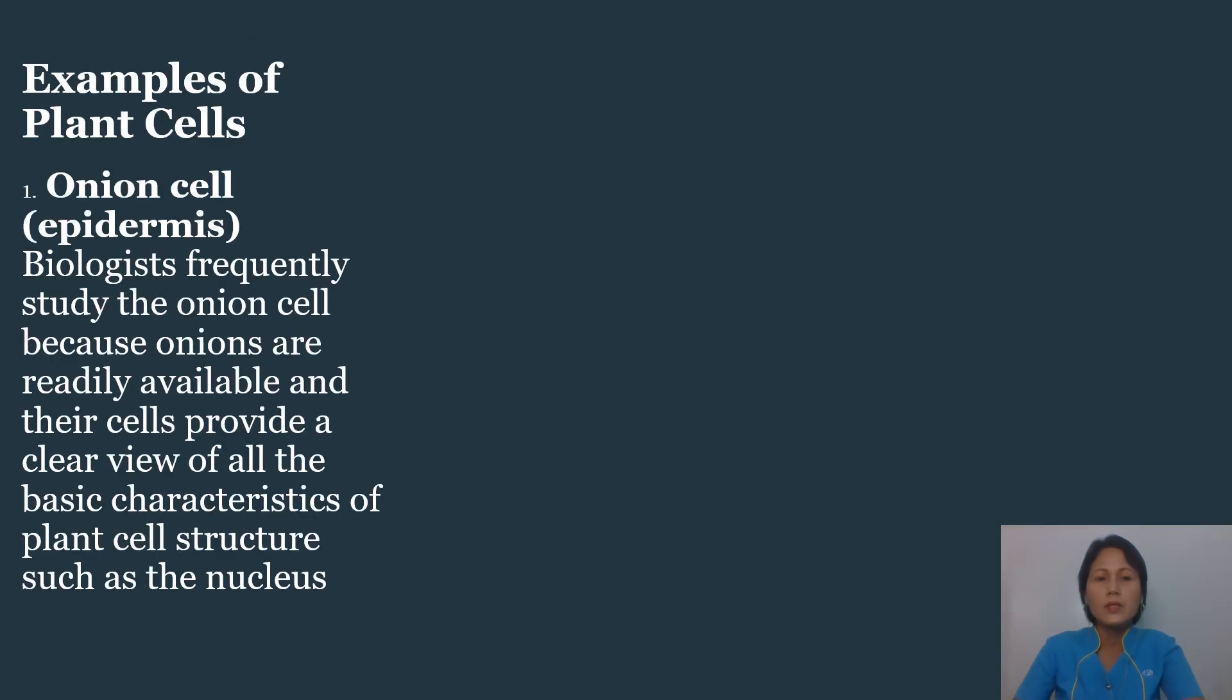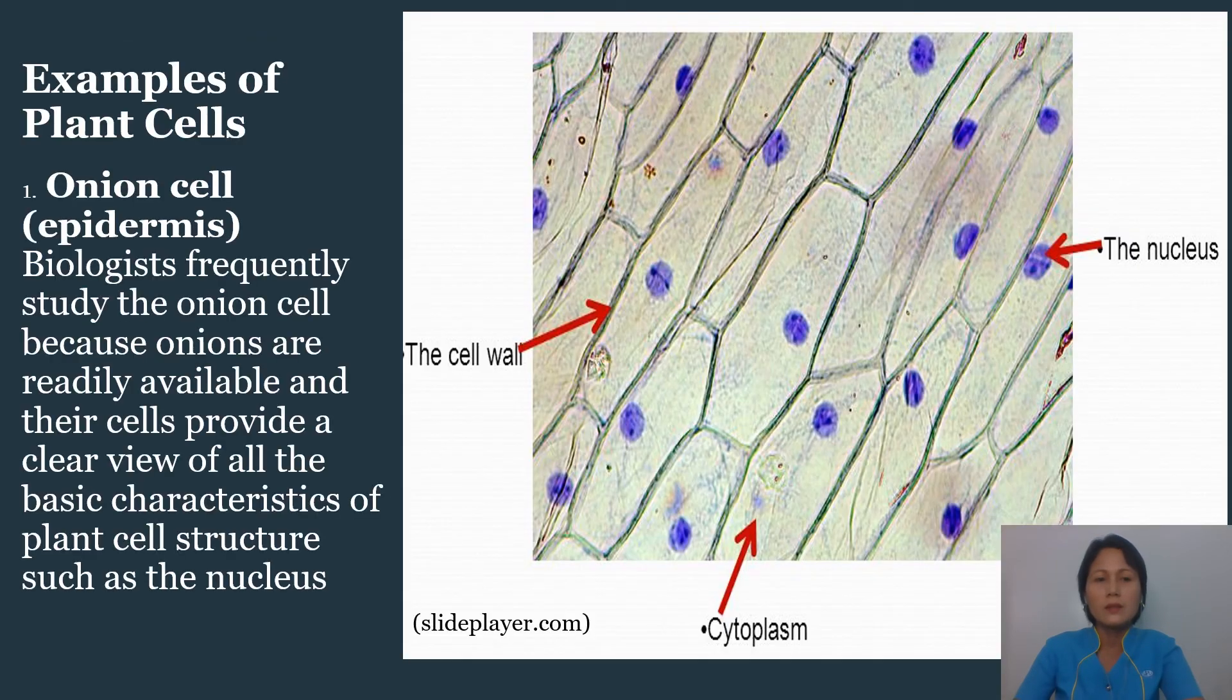Now, we also have the examples of plant cells. The onion cell or the onion epidermis are frequently used by biologists to study because they are readily available and their cells provide a clear view of all the basic characteristics of plant cell structure, such as the nucleus, like this one here. And of course, it is also showing the cell wall in here.